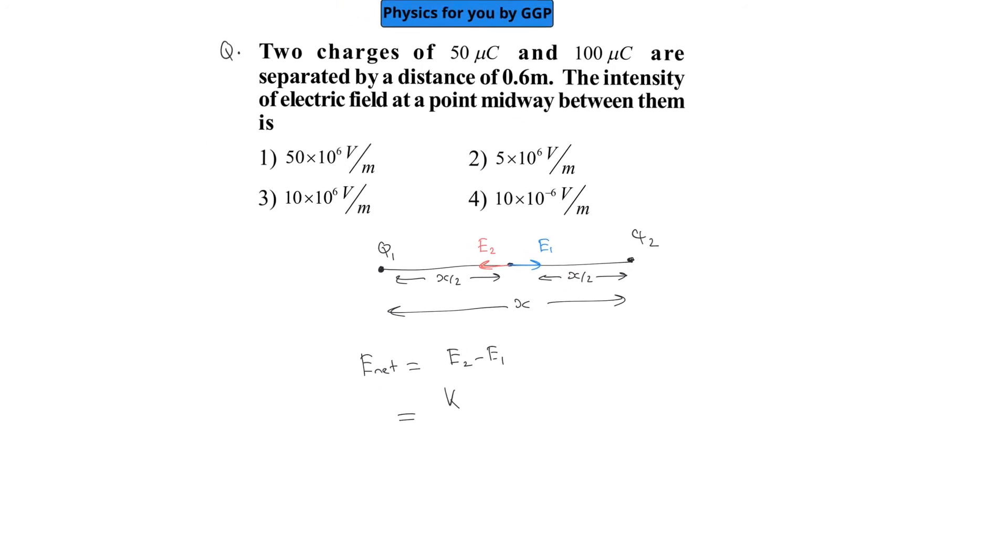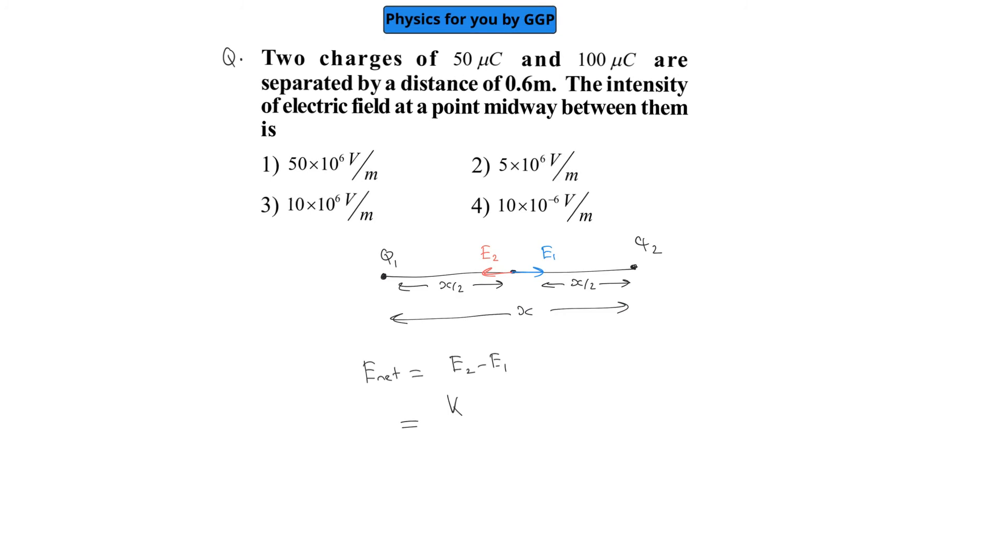The value of one charge is 100 micro coulombs, that means 100 into 10 raised to minus 6, divided by distance X divided by 2, the whole square.